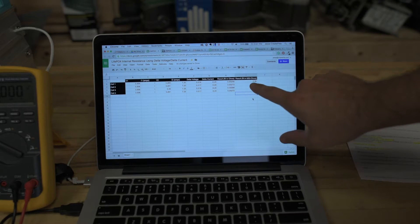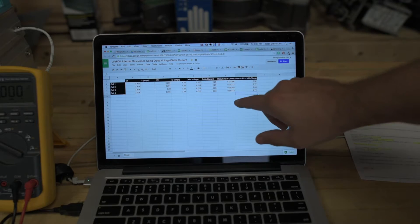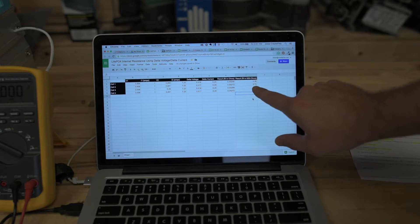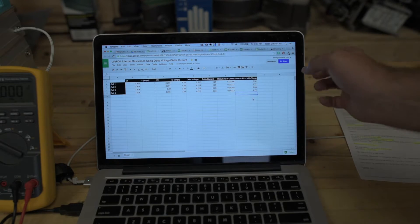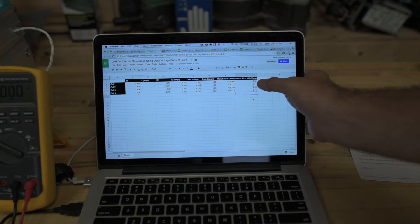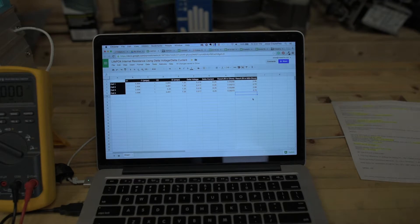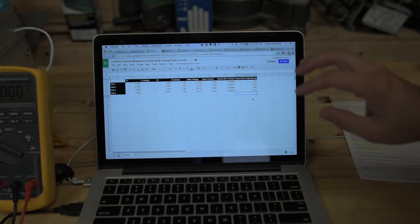Okay, so I just took a moment to add a last column here. We've got result, internal resistance in ohms. And we've got result, internal resistance in milliohms. So for cell 1, my internal resistance is 2.56 milliohms, 2.72 milliohms for cell 2, 2.88 milliohms for cell 3, and 2.72 milliohms for cell 4.